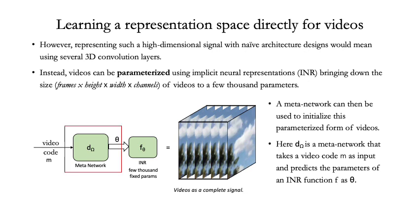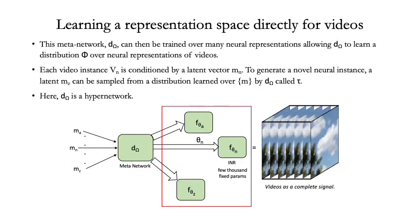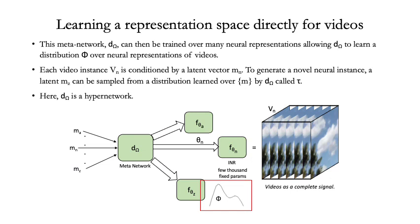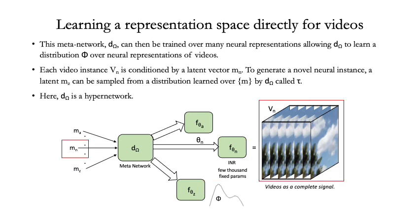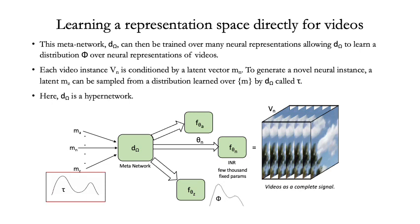As shown in the picture, D is a metanetwork that takes a video code M as input and generates theta, the parameters of the implicit neural function f. D can then be trained over many neural representations. This allows D to learn a representation space phi over the neural representations. Each video instance V_N is then represented by a unique video code M_N. A metadistribution tau is then learned by D such that every video code M is sampled from this space.